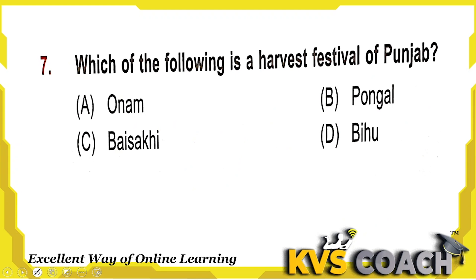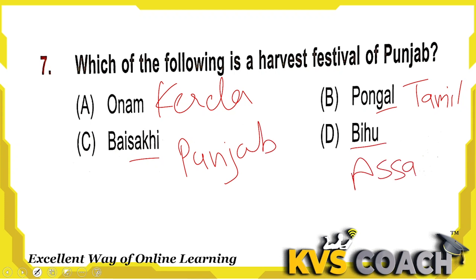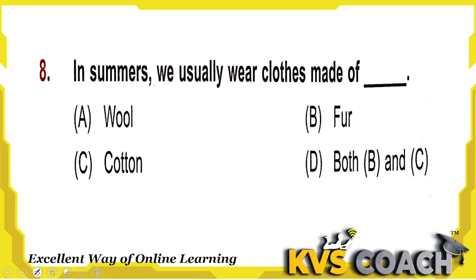Next question: which of the following is the harvest festival of Punjab? Onam is the harvest festival of Kerala. Pongal is the harvesting festival of the Tamil community. Baisakhi is the harvesting festival of Punjab. Bihu is the harvesting festival of Assam. So the harvest festival from Punjab is Baisakhi. Option C is the right answer.